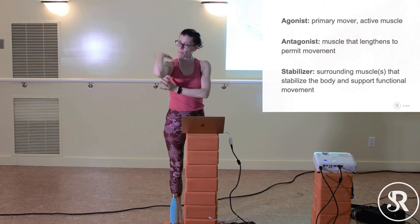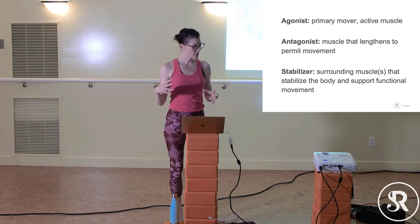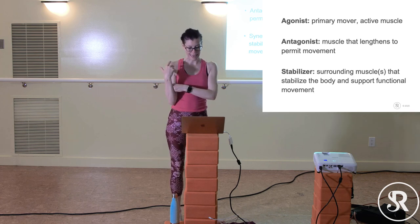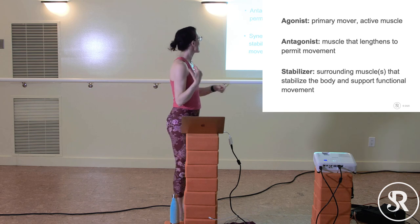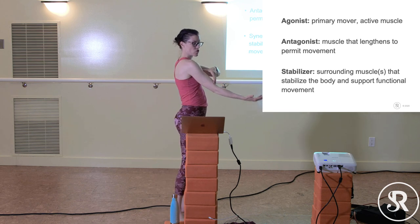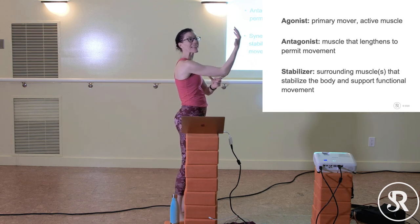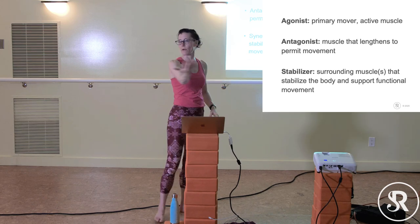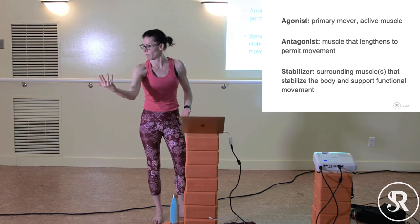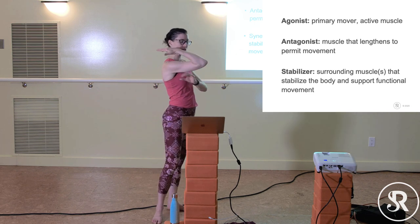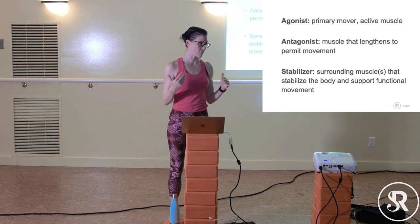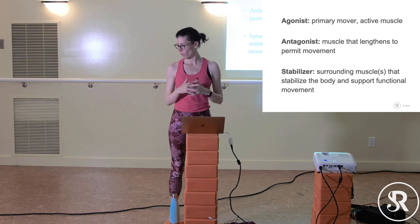The muscle that is shortening is called the agonist — the primary mover. The muscle that is lengthening to allow that movement is the antagonist. With the bicep shortening, the tricep has to lengthen; if it didn't, the shape wouldn't change. A synergist is a muscle that stabilizes around the joint to help permit that movement to happen.